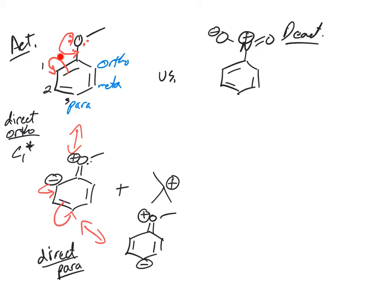So they also direct para. So if you have an electron donating group on the ring, it's an activator. Electrophiles will add where? To the ortho or para positions with activators. So that's activators.